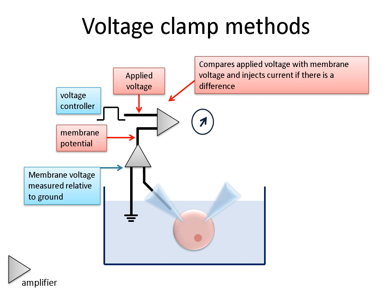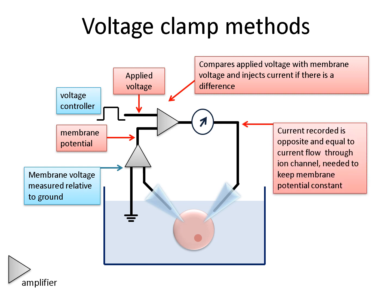The output of the amplifier is directed into the cell by a second microelectrode. If there is a difference between the membrane potential and the applied voltage, the microelectrode injects current, and this acts to change the membrane potential so that it matches the applied voltage. This current is the same magnitude as the current flowing through any activated ion channels, but is opposite in direction. So what is recorded is, in essence, the current that you need to inject into the cell to stop the membrane potential from changing in response to channel activation. And importantly, this happens on a very fast timescale so that there is an instantaneous injection of current as soon as any change in voltage is detected.